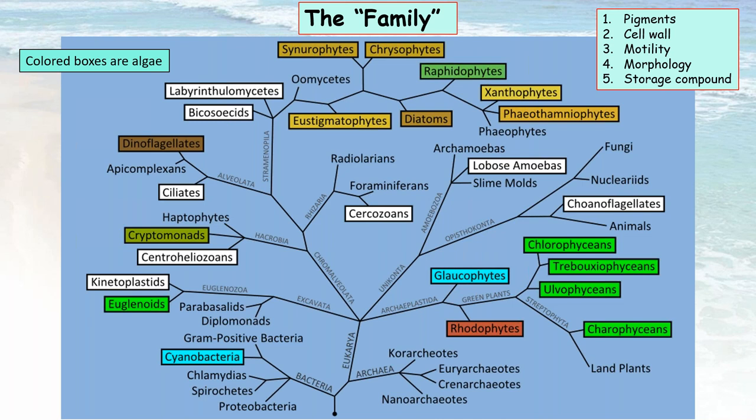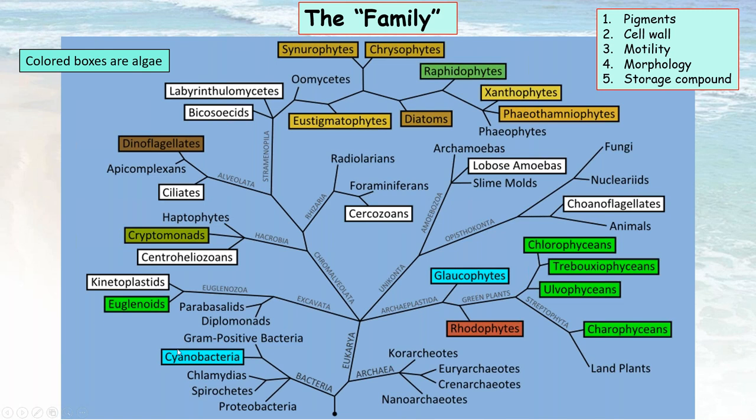When I learned about these, we called them blue-green algae because all the algae are unified because they have chlorophyll A. Cyanobacteria are no exception. They have the same kind of chlorophyll that all the other ones in this tree that are colored have. But then there's a bunch of other pigments. We can look at cell walls, motility, the nature of the cell wall. Diatoms have silica cell walls as an example. So morphology becomes important, storage compounds, and a host of other things.